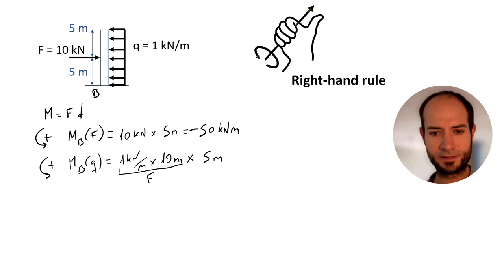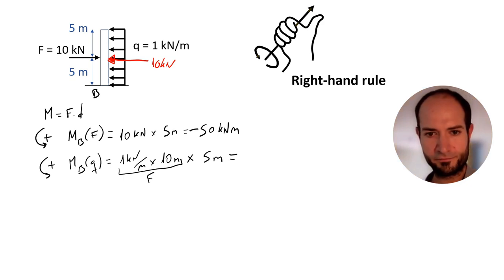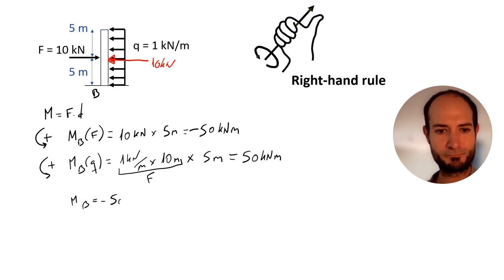As before, this line load of 1 kN over 10 meter height is equivalent to having here a 10 kN point load. So we have another 50 kN meter. In this case, the moment due to the light load is rotating anticlockwise, so positive. And as you can see, the total moment in B equals minus 50 plus 50 and that's 0.